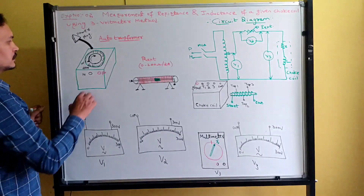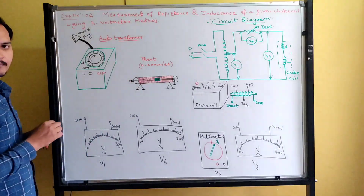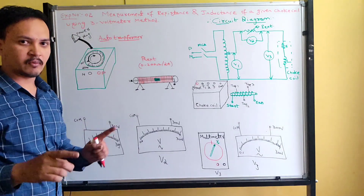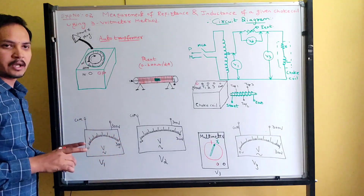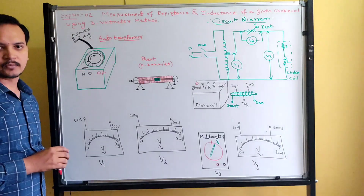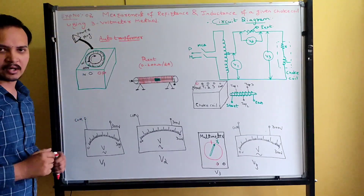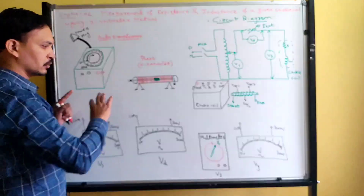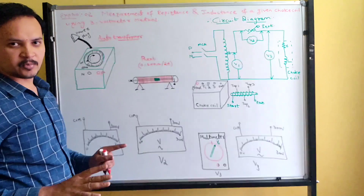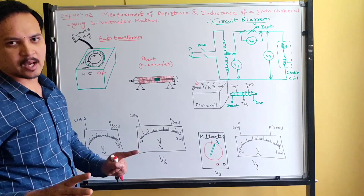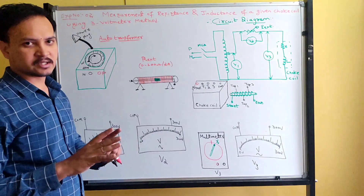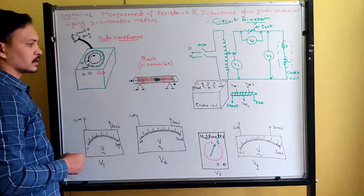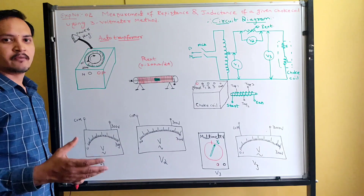This is the auto transformer and the power plug connected to the power plug socket. While doing the connections, switch off the supply — do not connect the power plug to the socket. Isolate the power plug from the supply. Once every connection is done completely, call the professor or lab instructor. Only with their permission, after they confirm it is correct, switch on the supply and apply the voltage.